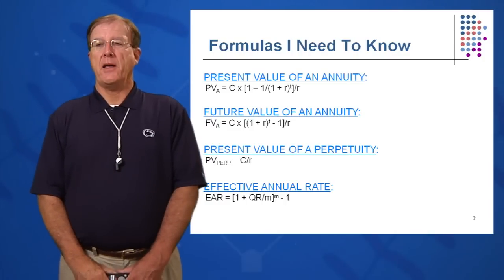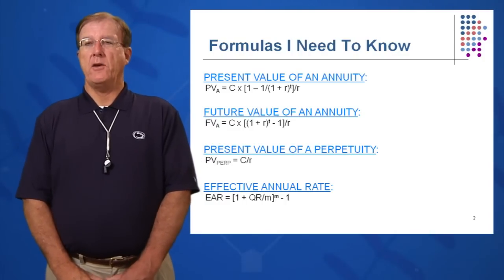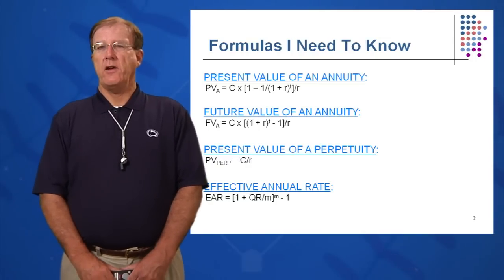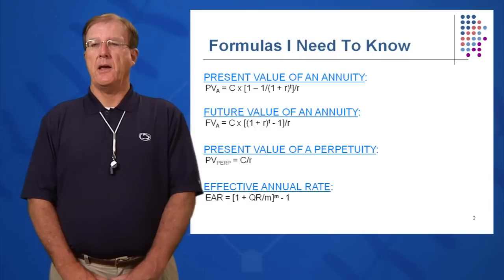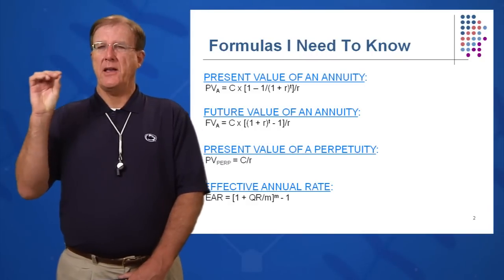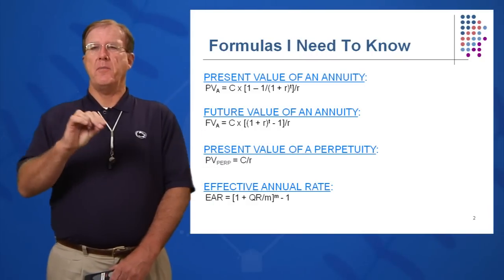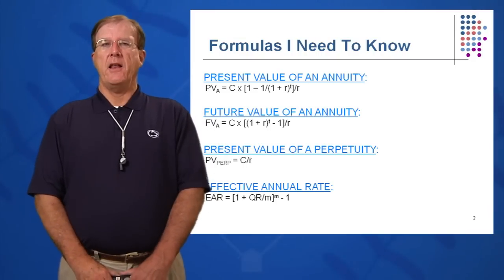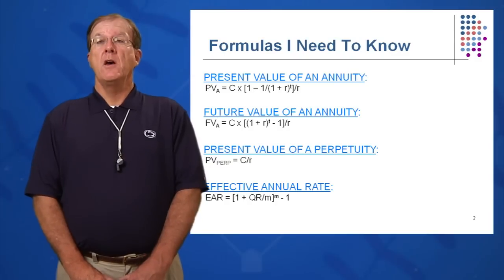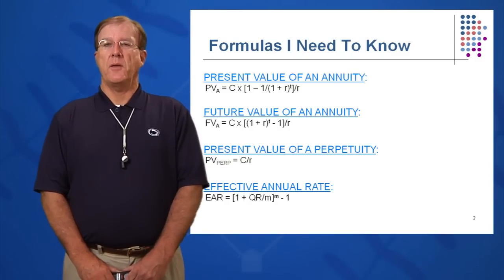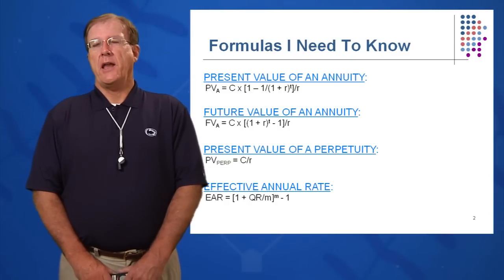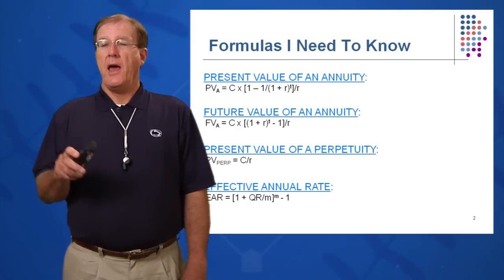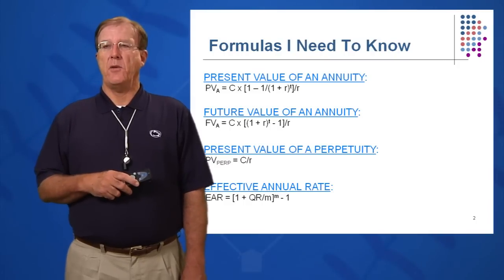And finally we're going to go over a topic of effective annual rate or EAR. When you see a rate quoted on your credit card is that the rate you're really paying or is it something if it says in small print compounded daily, compounded monthly, compounded quarterly. Are you really paying that rate? So if you get a credit card and this is 18% compounded monthly, are you really paying 18% or is it something different than that? The 18% being a stated rate or a quoted rate. So we're going to look at the EAR and calculate it to see how it can benefit you so you understand exactly what you're paying.